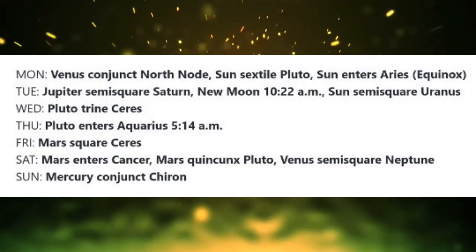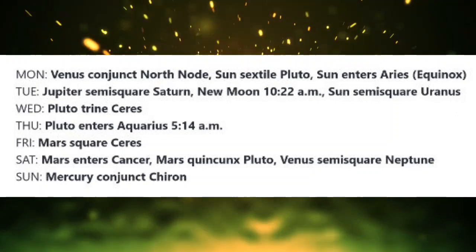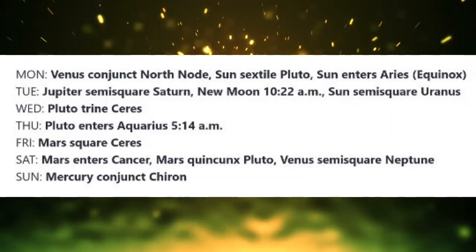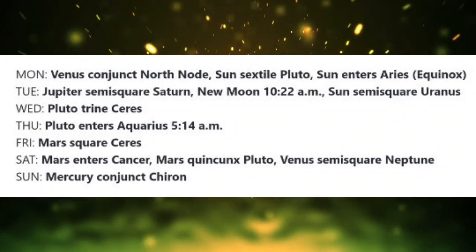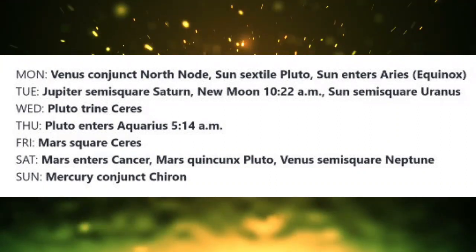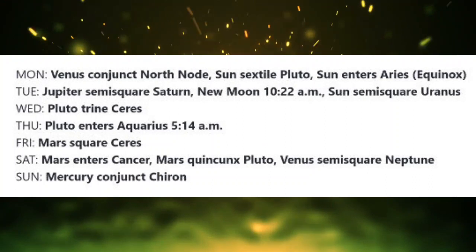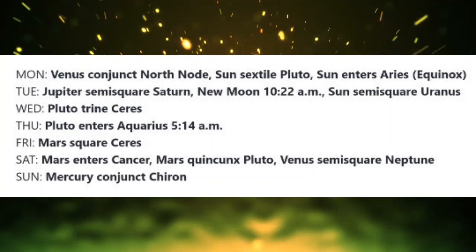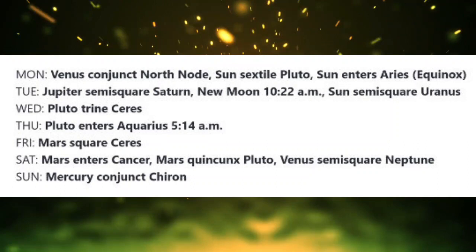On Monday, Venus is conjunct the North Node. Personal loyalties are strong, enabling us to bond with friends and loved ones. And on Monday, the Sun is sextile Pluto. This is an aspect of spiritual empowerment, when we may align more fully with our soul's calling. And Monday is the day that the Sun enters Aries. It will enter Aries at 2:24 PM Pacific Daylight Time, marking the equinox and the start of a new astrological year.